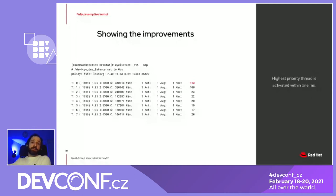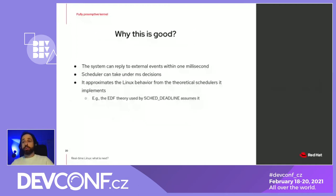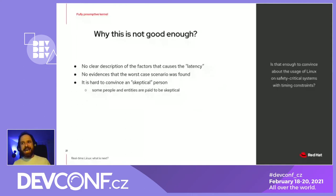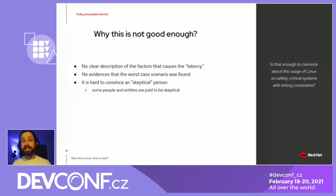This is good because it enabled Linux to be used on real-time systems and enabled the development of theory that relies on it, like SCHED_DEADLINE. But yet, there is no clear description of the factors that caused the latency. There is no evidence that the worst-case scenario was ever hit by cyclic test. So it's hard to convince a skeptical person.